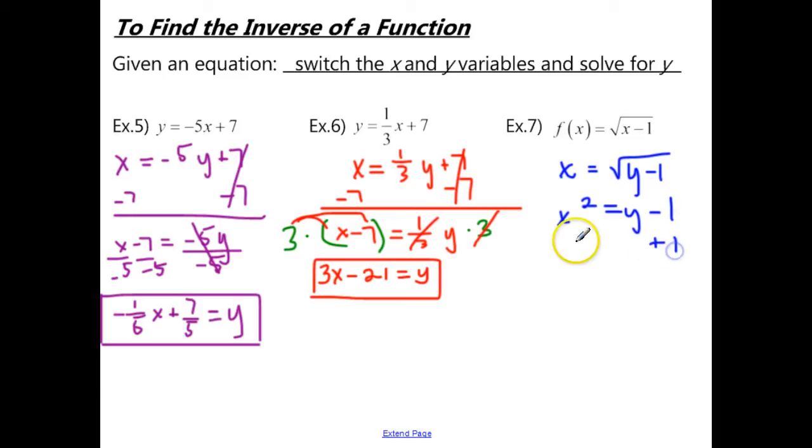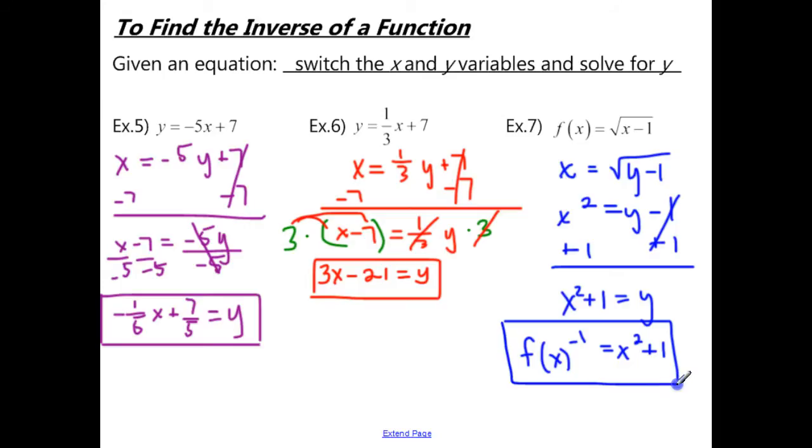And then we add 1 to both sides. So we end up with x squared plus 1 equals y. Now, the actual notation for an inverse is f of x to the negative 1 exponent equals, and then we'll put our inverse function, x squared plus 1. So this is actually how we write our inverse functions.